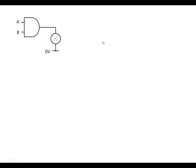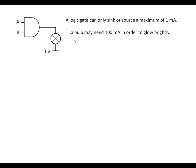For example, we want to control a bulb using a logic gate. There's a bit of a problem. A logic gate can only sink or source up to about 1 milliamp, but a bulb might need something like 100 milliamps in order to glow brightly. It's just not going to work. We can't sink or source enough current to get the bulb glowing brightly.